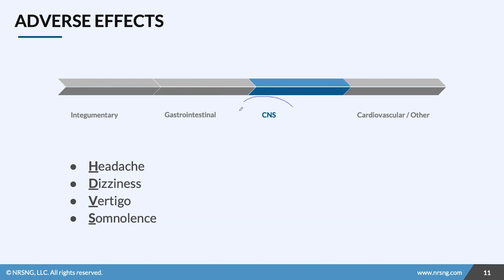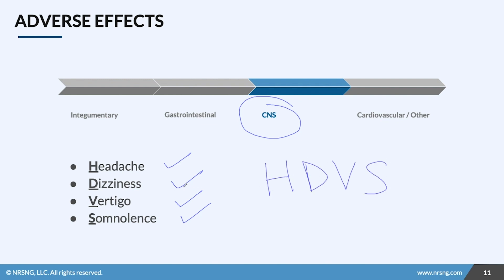Central nervous system side effects include headache, dizziness, vertigo, and somnolence. If you have a patient that suffers from migraines or vertigo already, this is going to exacerbate that pre-existing condition. An easy way to remember this is HDVS — I took the beginning letters of each symptom to help you remember the adverse effects of macrolides.